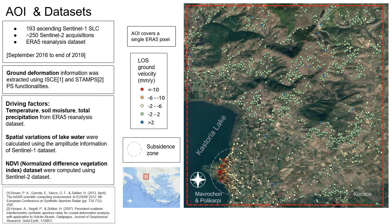The area of interest is located in northern Greece over an agricultural area nearby Kastoria Lake. The time of interest is from September 2016 till the end of 2019. The datasets consist of the ground deformation extracted using ICE and STAMPS PS functionalities, and of five driving factors which are temperature, soil moisture, precipitation, spatial variations of lake water, and NDVI dynamics.